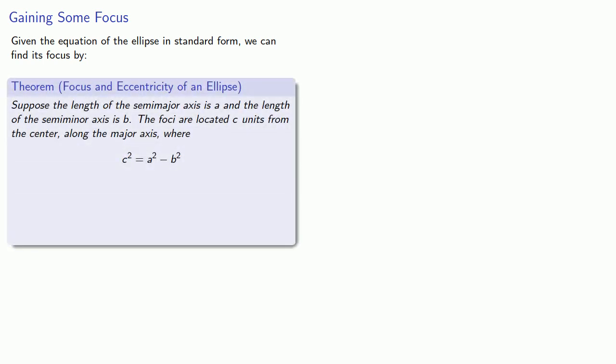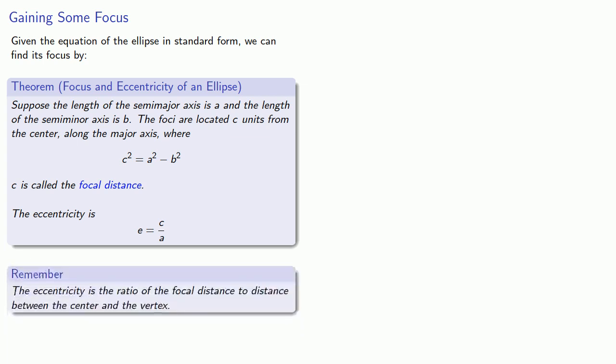Now, given the equation of the ellipse in standard form, we can find the foci as follows. If we know the length of the semi-major axis and the length of the semi-minor axis, the foci are located c units away from the center along the major axis, where c squared equals a squared minus b squared, and c is called the focal distance. Meanwhile, the eccentricity is the ratio c divided by a — that's the ratio of the focal distance to the distance between the center and the vertex.